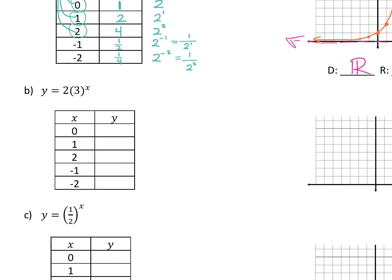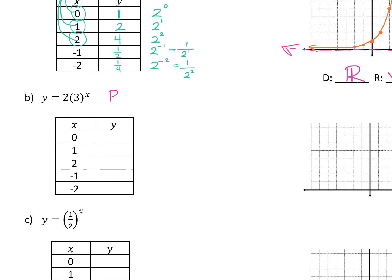Second one. PEMDAS matters here — please follow the rules of PEMDAS. Are we going to multiply the two times three first, or take three to the power first? Three to the power. Don't forget that. If you do it wrong, you get a really clunky graph. So if we plug in a zero, this is two times three to the zero power. Basically, we're saying two times what? Three to the zero is one, so two times one is two.